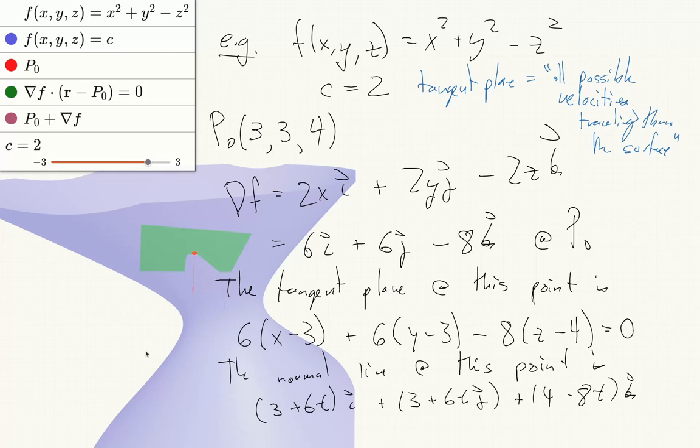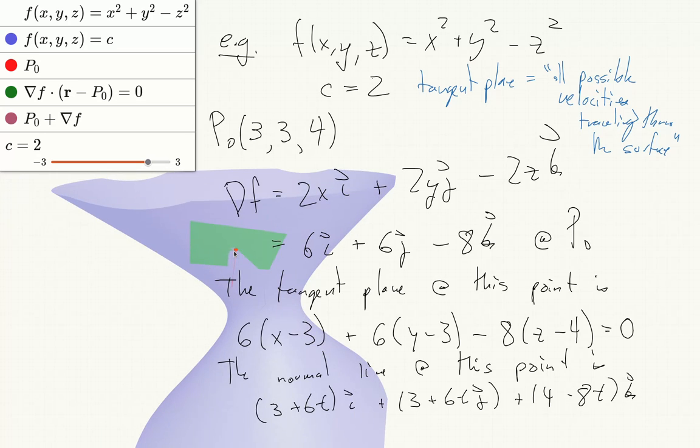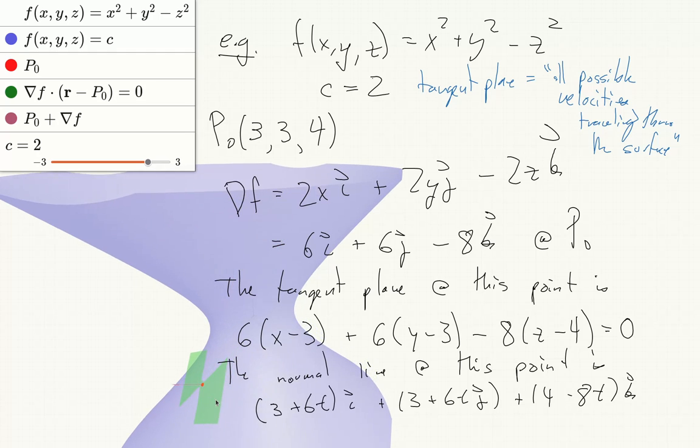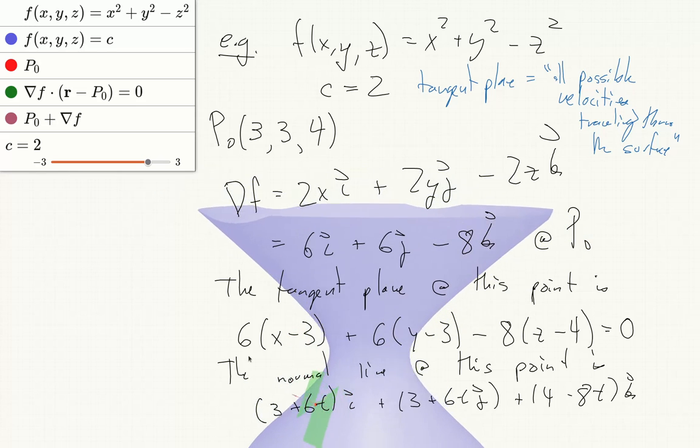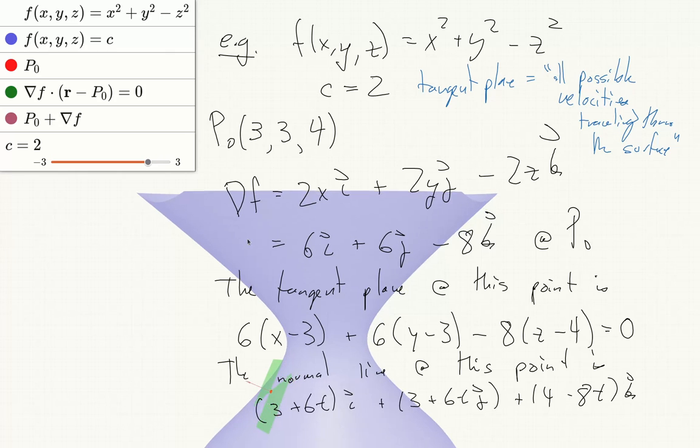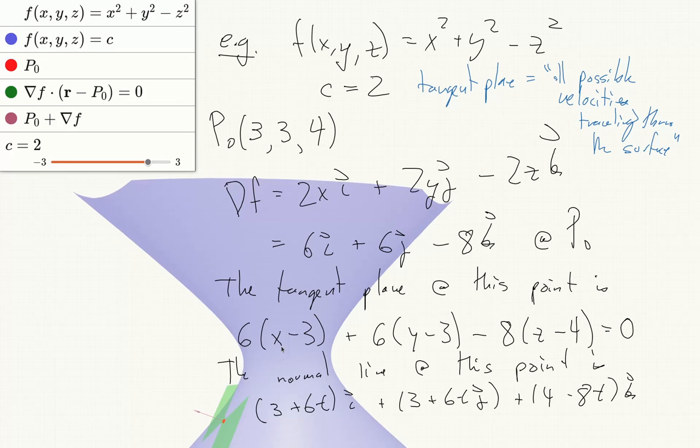And then another thing I wanted to mention is in this demo where you can move the point around, I didn't program in finding the gradient vector, this is just something that the computer does by itself, finding the normal vector to a surface at a point, because surface normals are extremely important in computer graphics for rendering things and deciding how lighting should be done and so on.